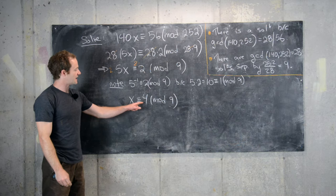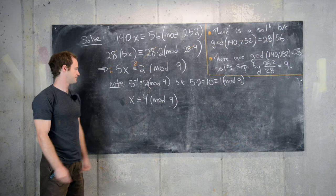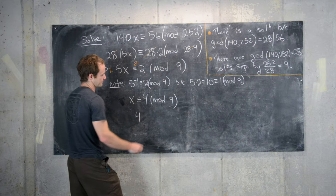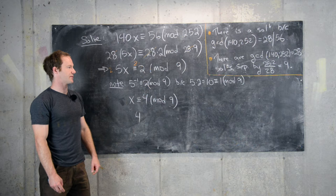Now, if something's 4 mod 9, then it's also 4 mod 252. So that means 1 solution is equal to 4. And then, like we said over there, there should be 28 solutions, each separated by 9.